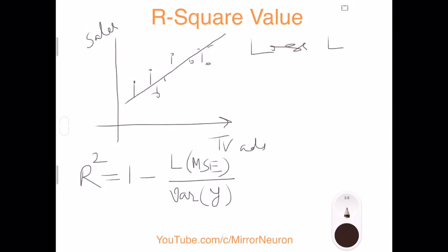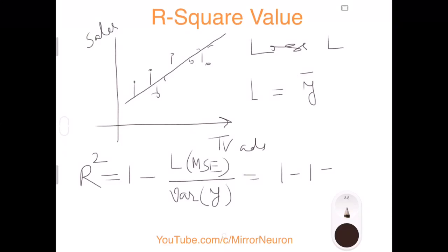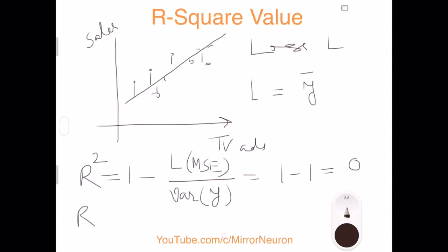If I just take the average of my y value, then in that case my loss function is equivalent to the variance in y, and in that case my R-squared value will be 1 minus 1, and that will be equal to 0.